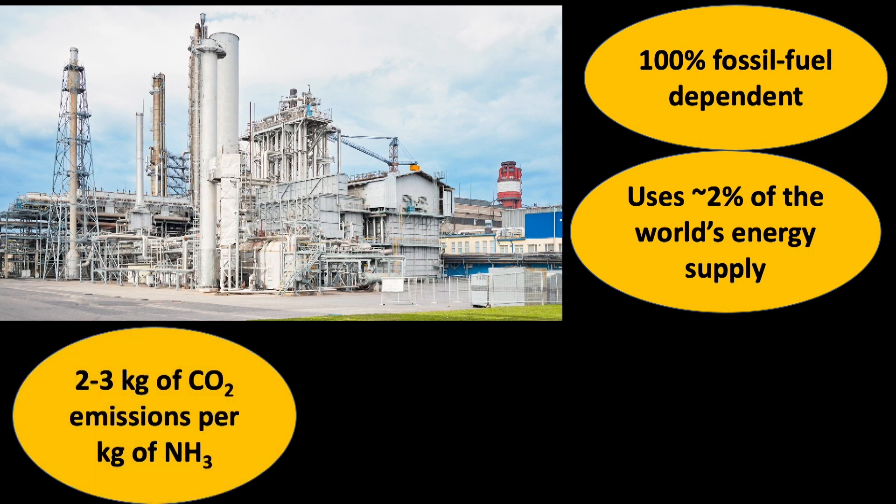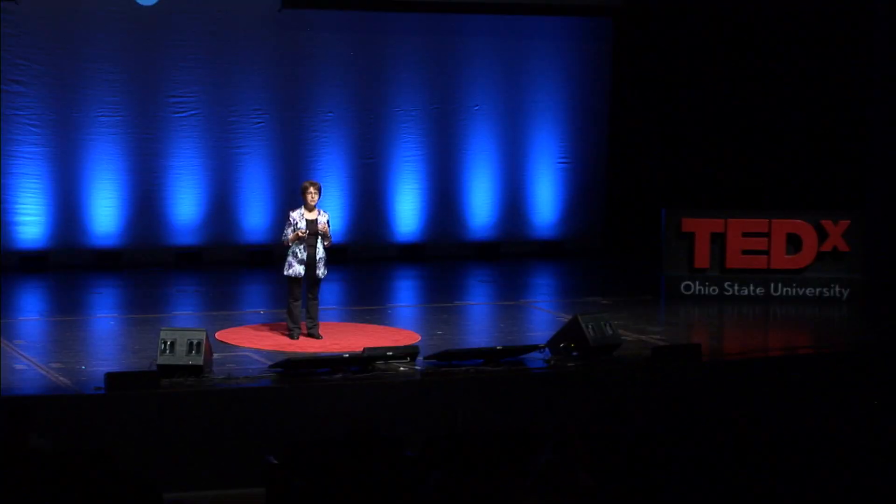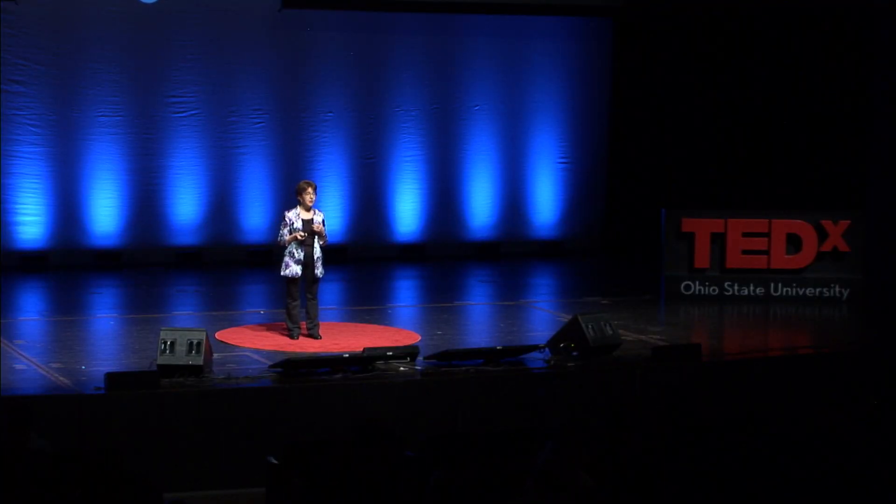And to produce one kilogram of ammonia, we are emitting to the atmosphere between 2 and 3 kilograms of carbon dioxide, depending on where we get hydrogen from. If we get it from coal, it may be more than 3 kilograms of carbon dioxide per every kilogram of ammonia we're making. And the world is producing about 144 million tons of ammonia a year. So you do the math. If we want to sustain the world's growing population, but at the same time mitigate global warming, we really need to stop relying on such antiquated processes. We need to come up with new technologies, novel technologies that rely on renewable energy and introduce process efficiency.